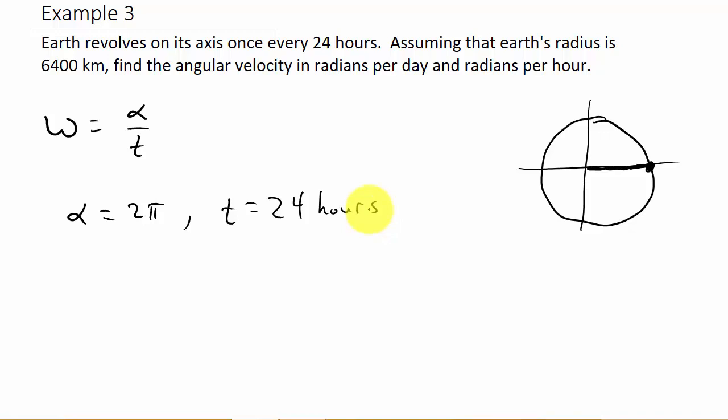So now we can plug this in to our formula. We've got alpha, we've got t. So the angular velocity is going to be 2 pi over 24, which would be pi over 12 radians per hour. And that's what they wanted.